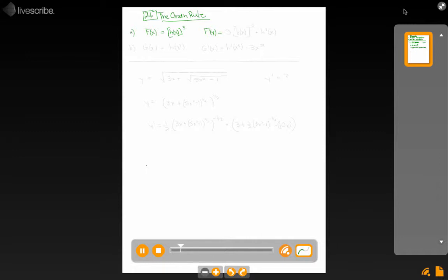Using the chain rule, we know that it should be 3 times h of x squared times the derivative of the inside, which is just h prime x. And because we're not told any more information about what h is, that's where we stop.